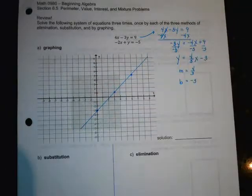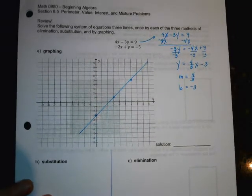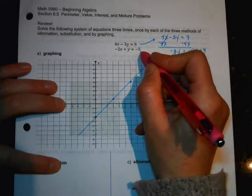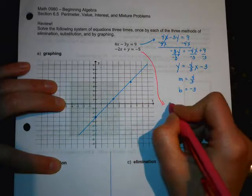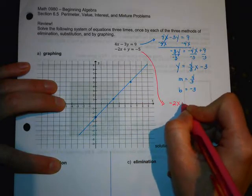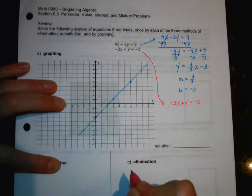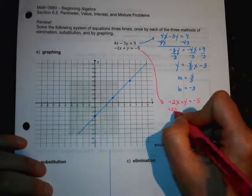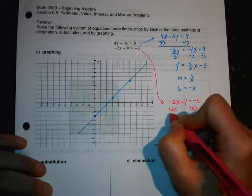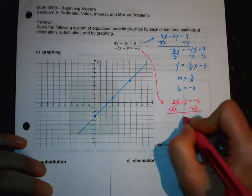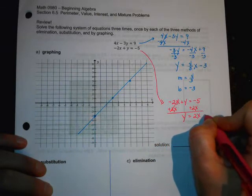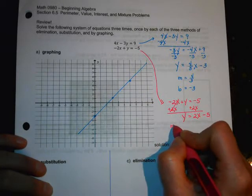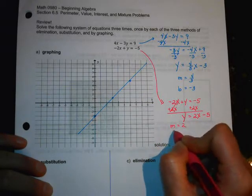All right, and now let's mess around with the next one. So I'm going to bring it down here. So I've got negative 2x plus y equals negative 5. All right, so I'm going to add 2x to both sides, and that'll give me y equals 2x minus 5.